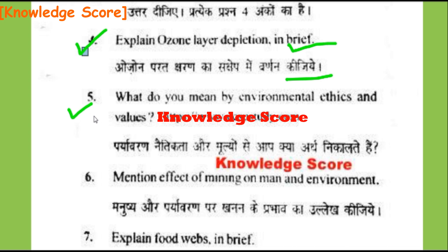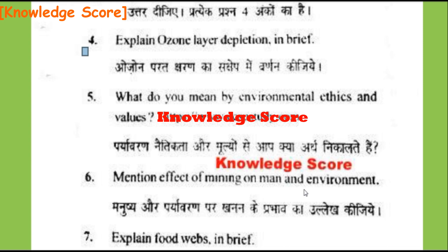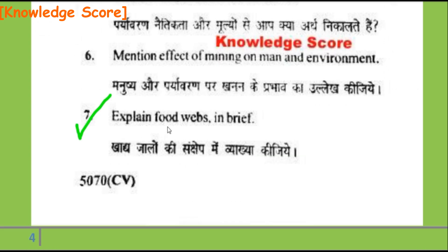Question 5, Section B: What do you mean by environmental ethics and values? Paryavaran naitikta aur mulyon se aap kya arth nikaalte hain? Question 6, Section B: Mention the effects of mining on man and environment. Question 7, Section B: Explain food webs in brief.